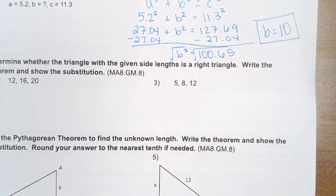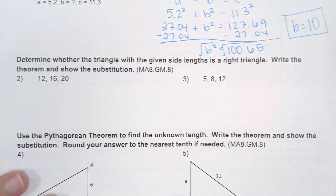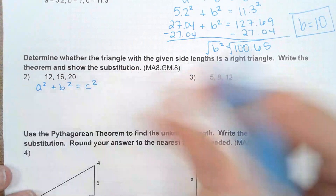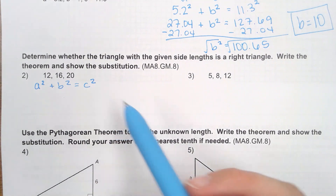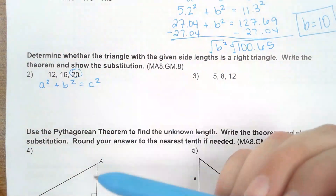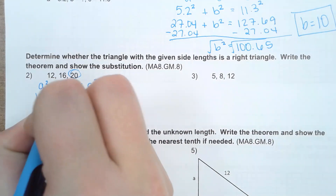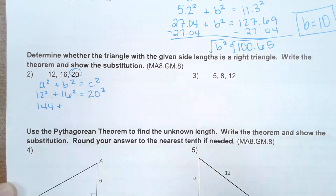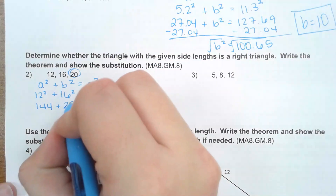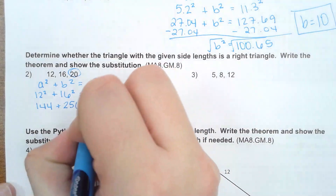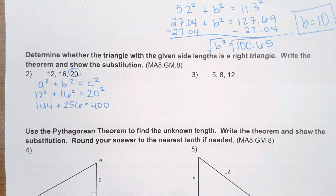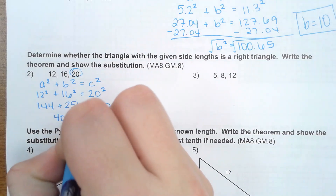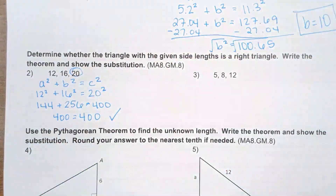Next: determine whether the triangle with the given side lengths is a right triangle. Write the theorem and show the substitution. In order for three numbers to form a right triangle, it has to satisfy our Pythagorean theorem. We are going to substitute our numbers in — make sure your largest number, in this case 20, is plugged in for c because that would be your hypotenuse. So 12² = 144, 16² = 256, and 20² = 400. Adding 144 + 256 gives 400. Since 400 = 400, that is a true statement, which means it is going to form a right triangle.